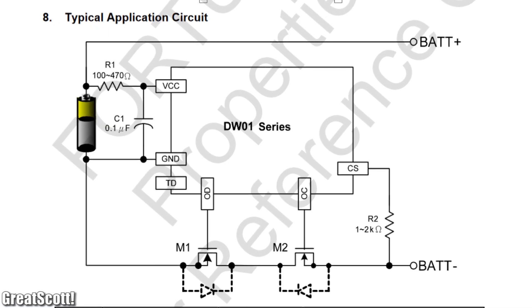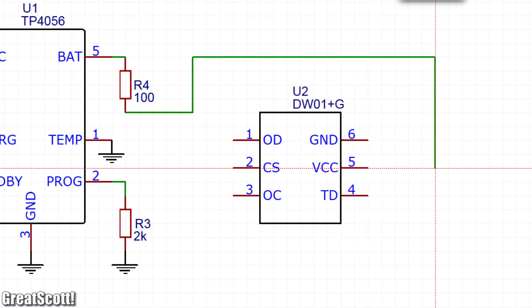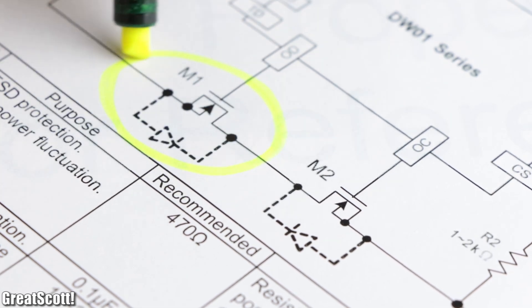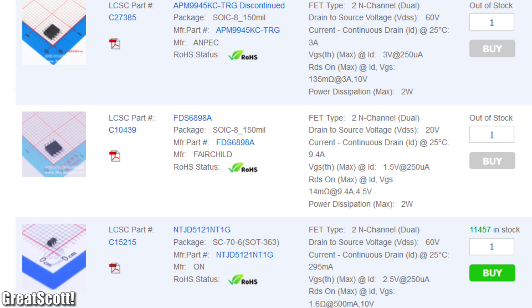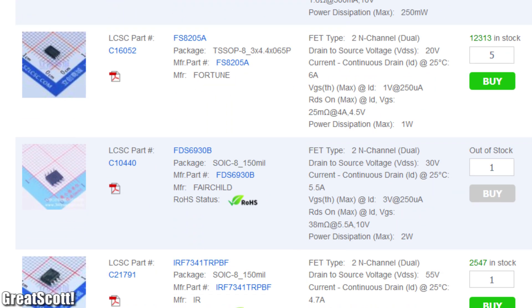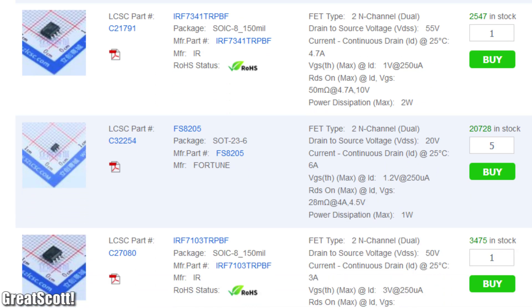Again, a typical application circuit was present whose rebuilding in the software was no problem at all. But the two mandatory MOSFETs were still missing.